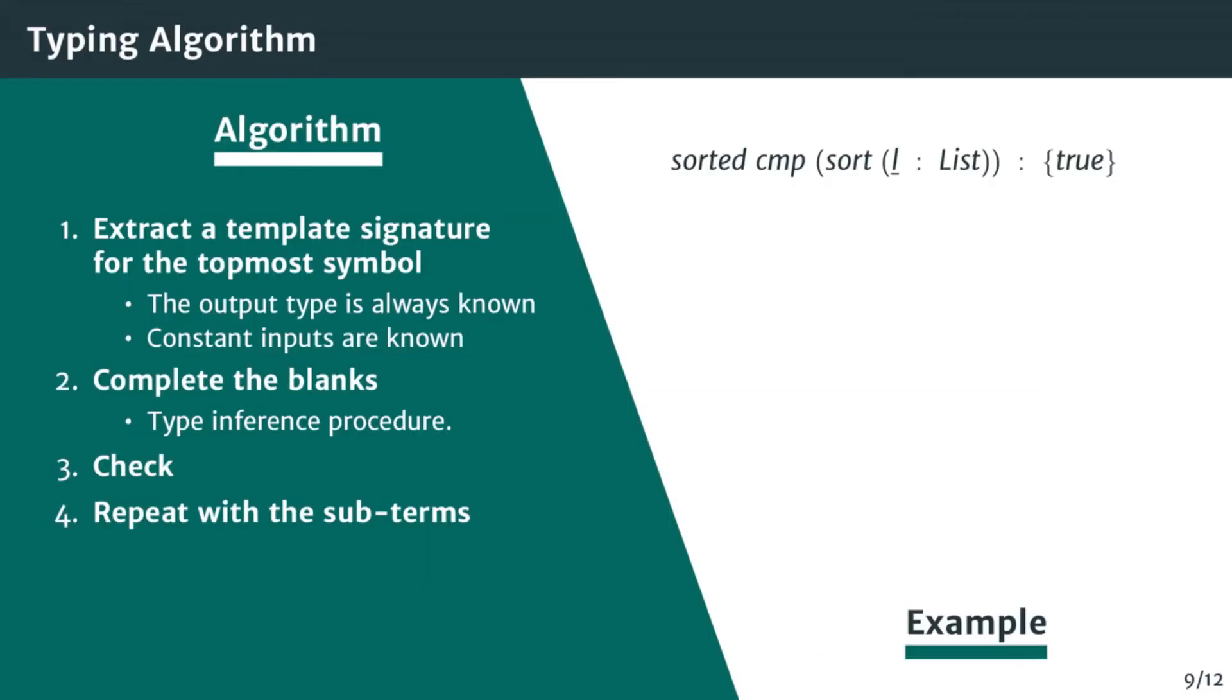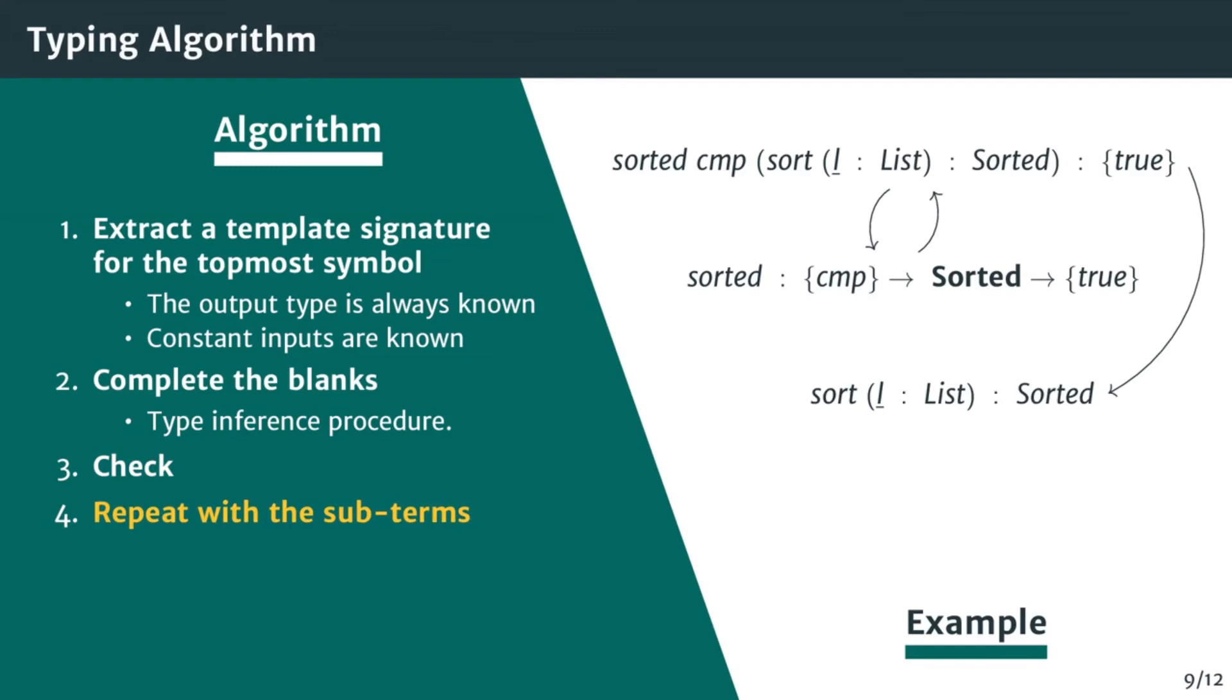From the partially typed given input term, the type checking algorithm is defined as follows. First, we extract a type signature for the top symbol, sorted. We know the expected output type, true. Constant values, such as the comparison function CMP, are typed with themselves and can be reported directly on the signature. We complete the blanks in the signature using our type inference procedure. We find that to output true, the input list must be sorted, which is represented by the regular language name sorted. We propagate back what we have found and check that it matches the initial type information.